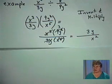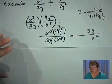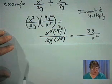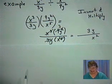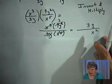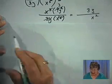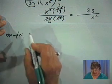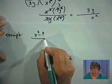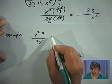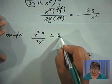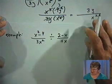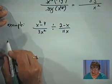We've written this expression in simplest terms. Division of rational expressions becomes a multiplication problem, as we did earlier. Let's look at something a little more involved. Consider an example where we have X squared minus 4 over 3X squared, divided by 2 minus X over 11X.